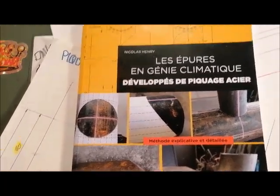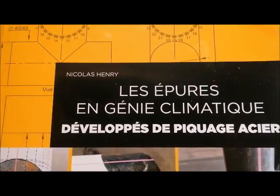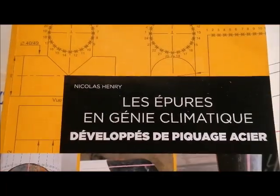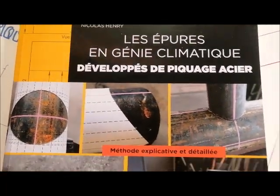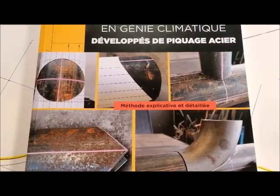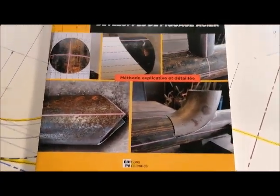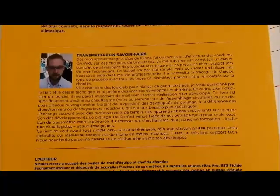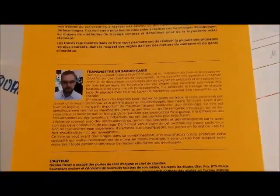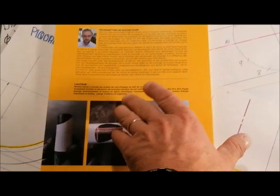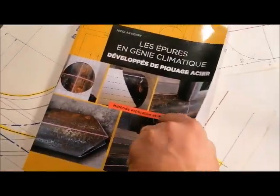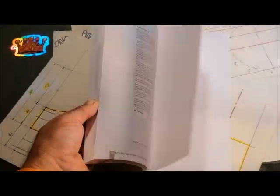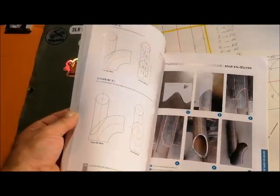Le bouquin 'Les épures en génie climatique', c'est tout ce qui est développé en tuyautage en acier. C'est Nicolas Henry qui a écrit ce bouquin qui est quand même très intéressant car on va y voir toutes sortes de piquages comme le piquage droit, le piquage orienté, le piquage tangentiel, piquage sabot, piquage pied de biche.